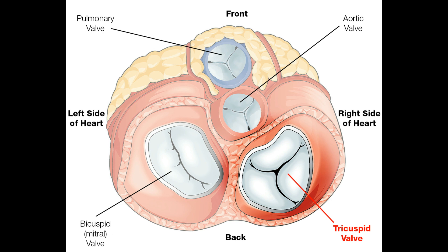The second wall is the Thebesian wall. It is located at the opening of the coronary sinus, and it allows the passage of blood into the right atrium.